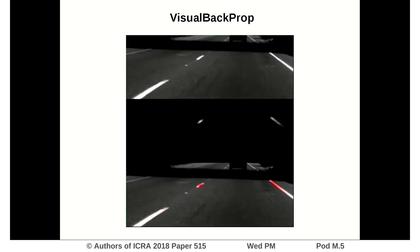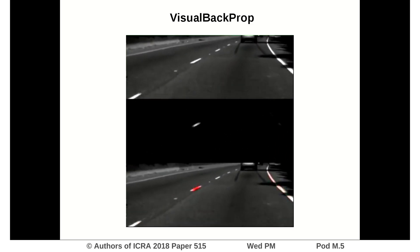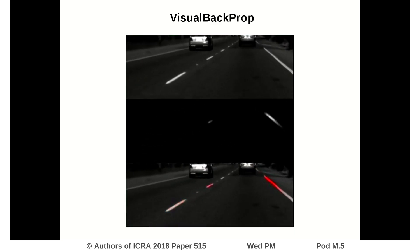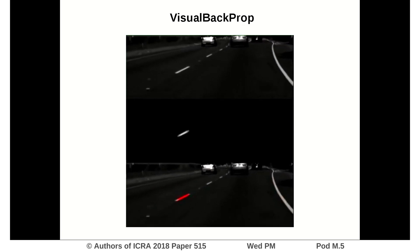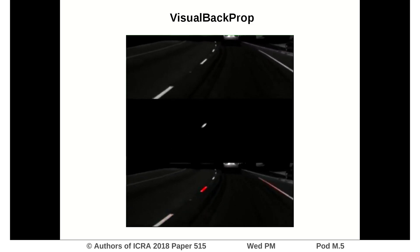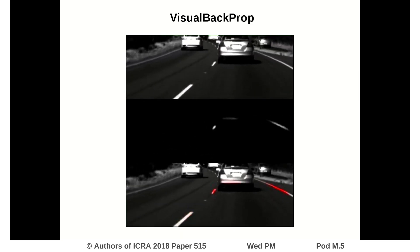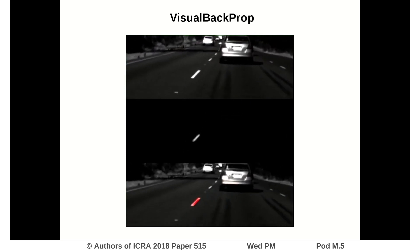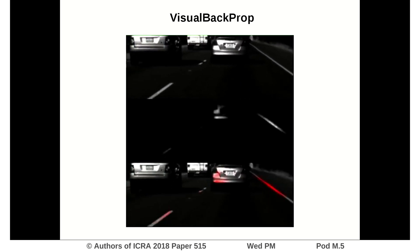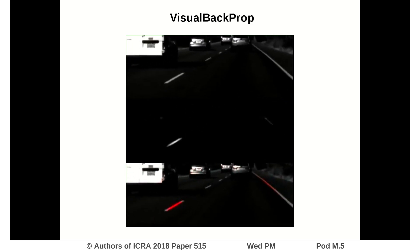We justify our approach with theoretical arguments and confirm that the proposed method identifies sets of input pixels rather than individual pixels that collaboratively contribute to the prediction. We utilize the proposed visualization tool in the NVIDIA neural network-based end-to-end learning system for autonomous driving, known as PilotNet. We demonstrate that Visual Backprop determines which elements in the road image most influence PilotNet's steering decision and indeed captures relevant objects on the road. Our paper contains additional empirical evaluation showing the plausibility of the proposed approach on public road video data, as well as in other applications.